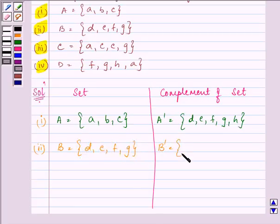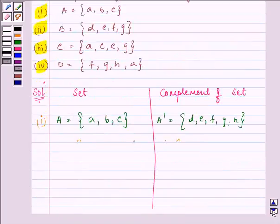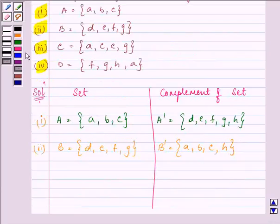So, the elements of B complement will be A, B, C, and H, which is remaining and not a part of set B.